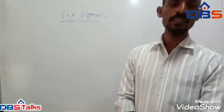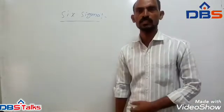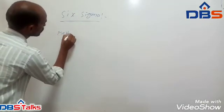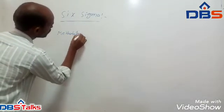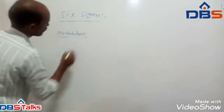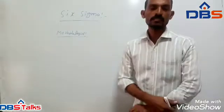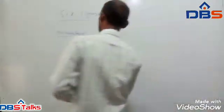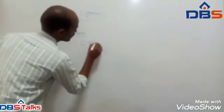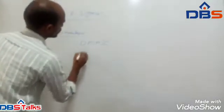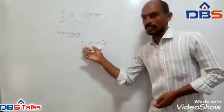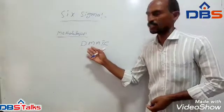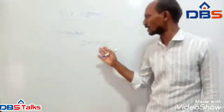Six Sigma has two methodologies. The first methodology is DMAIC, which means Define, Measure, Analyze, Improve and Control.